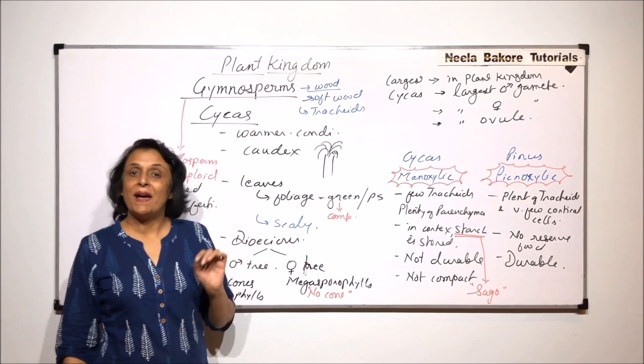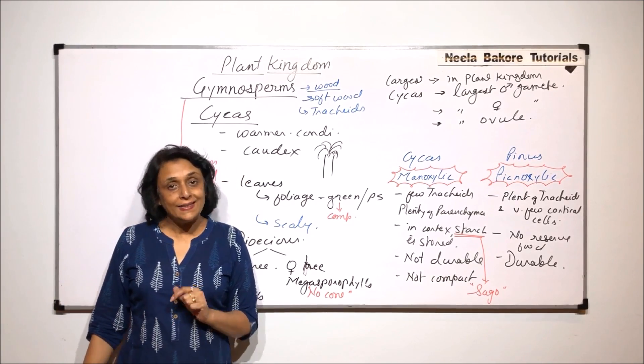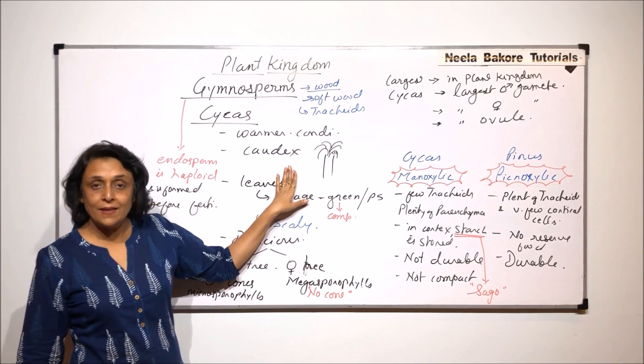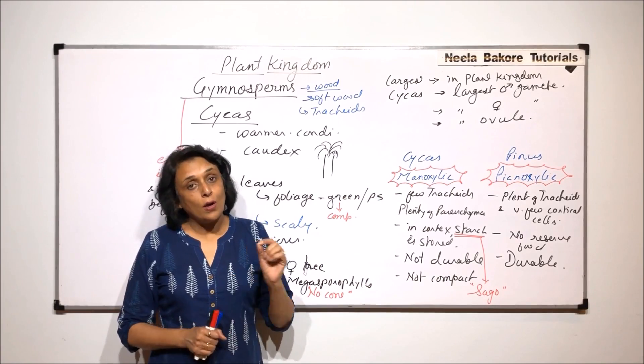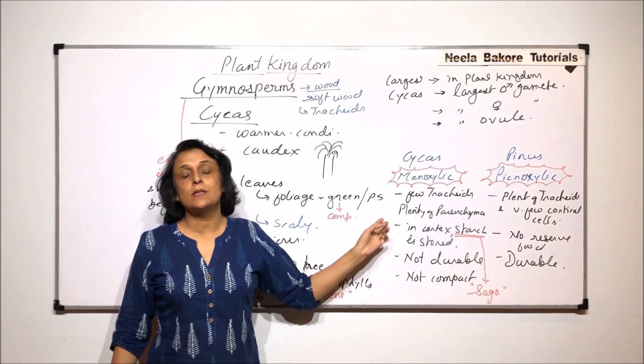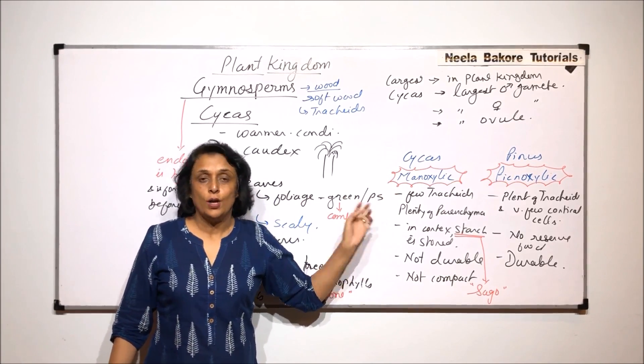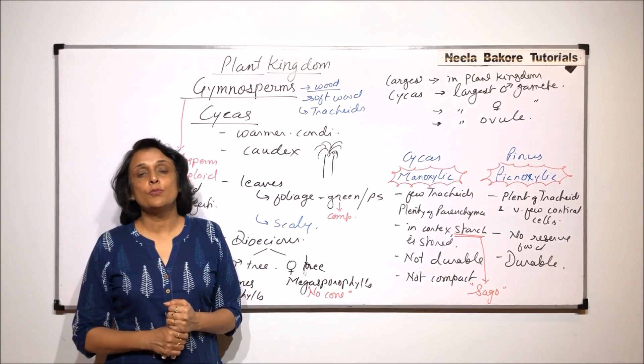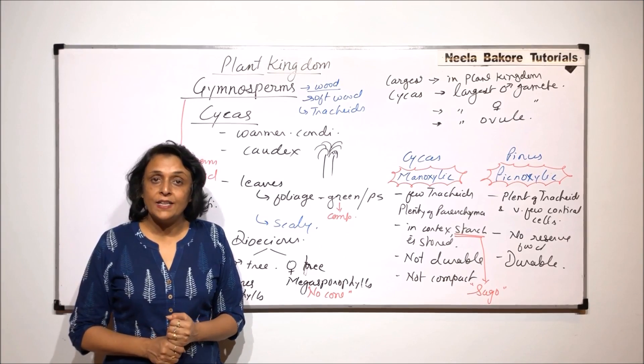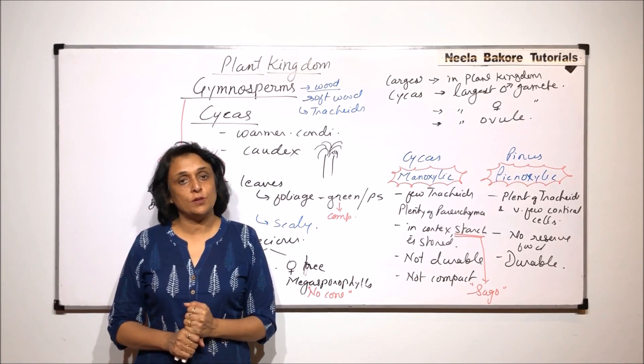So we have discussed Pinus complete life cycle in detail. And this is Cycas and also how we compare Cycas and Pinus on these parameters, that is mainly the wood. So this completes our gymnosperm group. Now the last group which we have to talk about in plant kingdom is angiosperms. That we will take up in the next video.